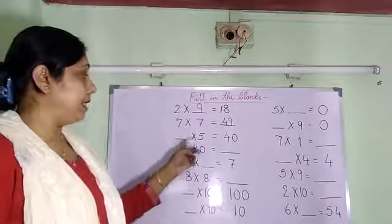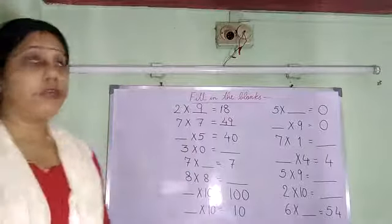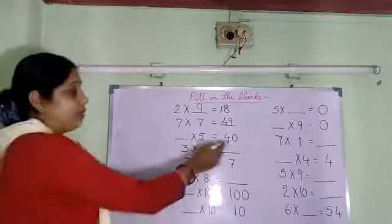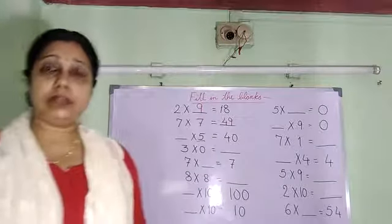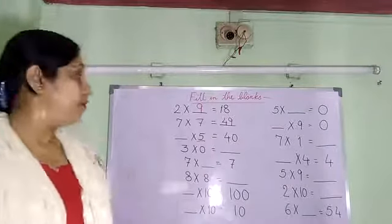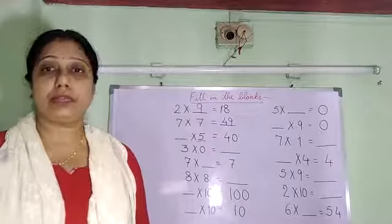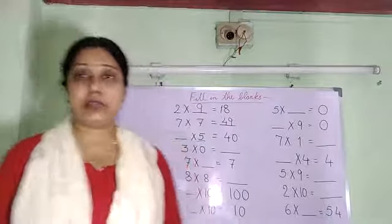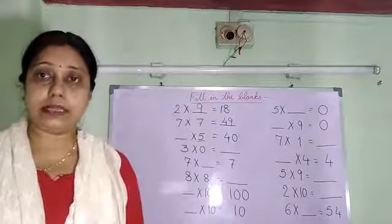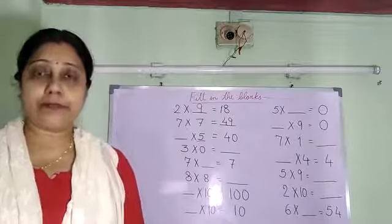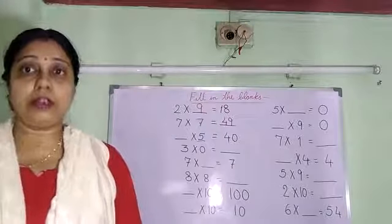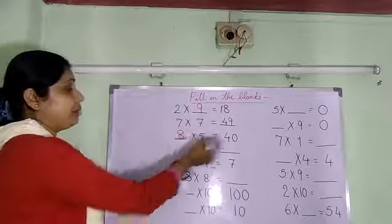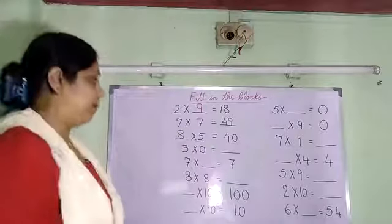The first there is a blank and then multiply it by 5, so we have to read the table of 5 until 40 is coming: 5 1s are 5, 5 2s are 10, 5 3s are 15, 5 4s are 20, 5 5s are 25, 5 6s are 30, 5 7s are 35, 5 8s are 40. So we are going to fill here 8. That means 5 into 8 is 40.